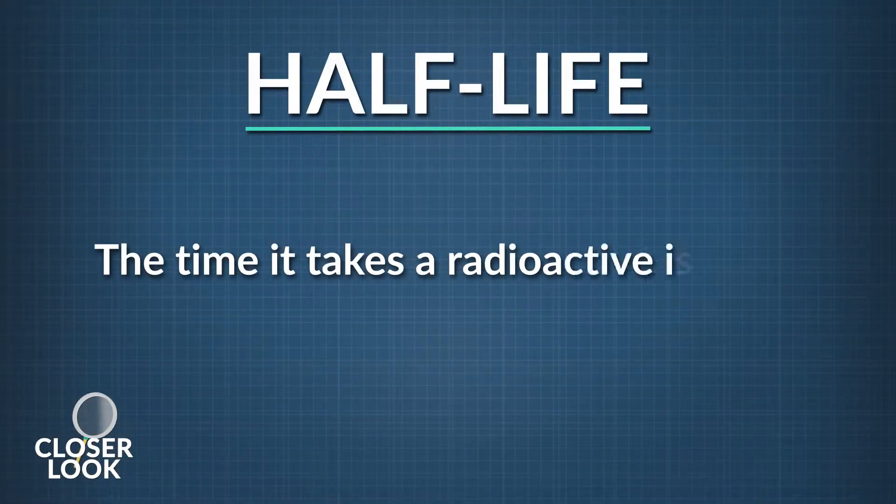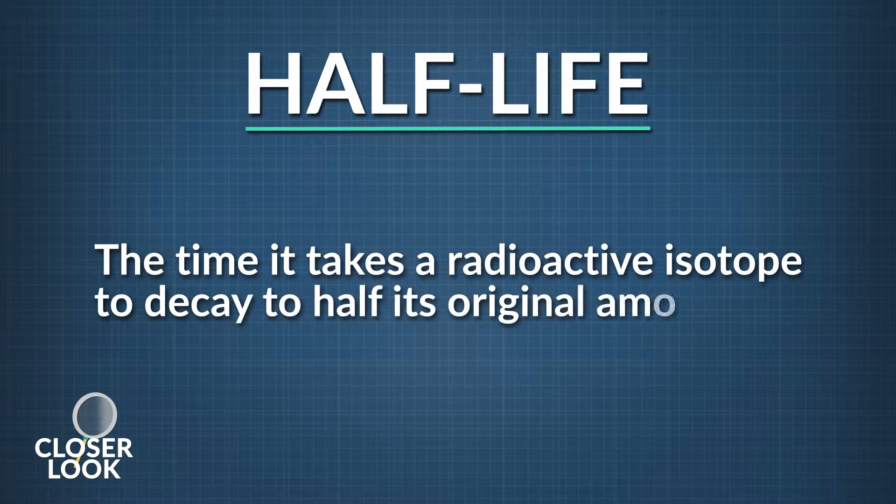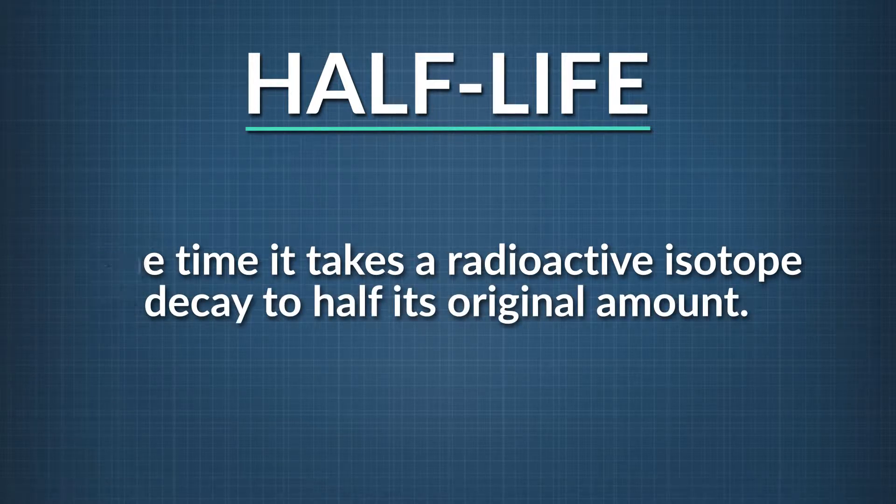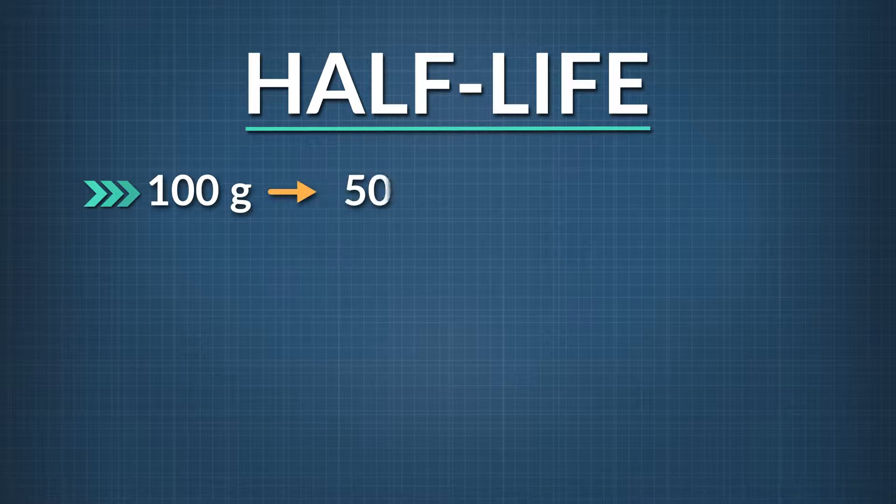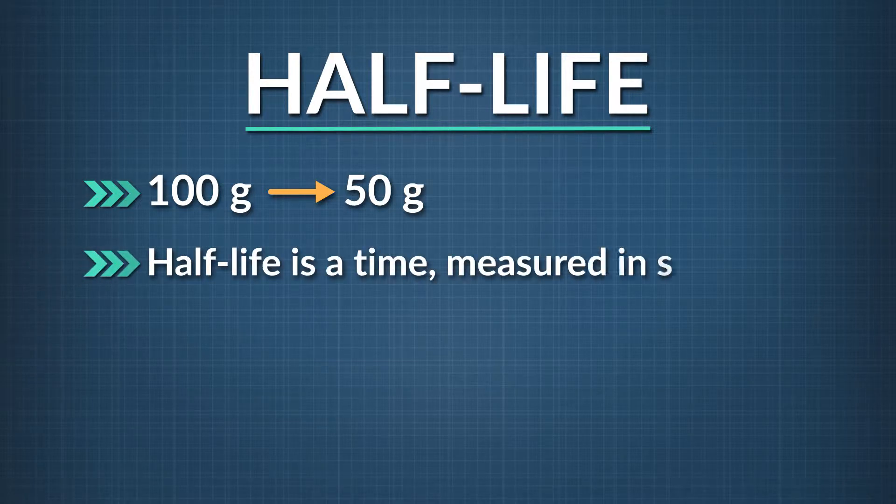We learned that the time a radioactive isotope takes to decay to half its original amount is called its half-life. If we counted the time it took for 100 grams of a radioactive isotope to decay to 50 grams, that would be the half-life of that particular isotope. Half-life is a time measured in seconds, and it's different for each decaying isotope.